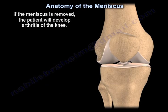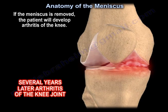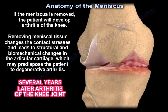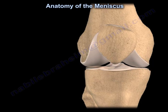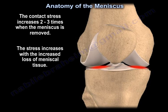If the meniscus is removed, the patient will develop arthritis of the knee. Removing meniscal tissue changes the contact stresses and leads to structural and biomechanical changes in the articular cartilage, which may predispose the patient to degenerative arthritis. The contact stress increases two to three times when the meniscus is removed, and the stress increases with greater loss of meniscal tissue.